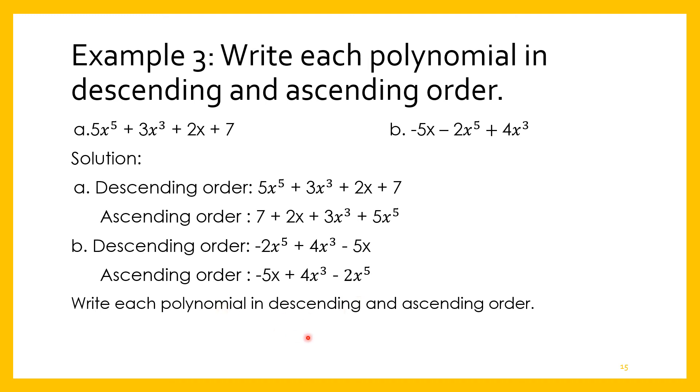Write a polynomial in descending and ascending order. If we are going to write that in descending order, this is already descending. 10X⁶ + 4X⁴ + 3X + 2. This is already descending order. In ascending order, we have 2 + 3X + 4X⁴ + 10X⁶.